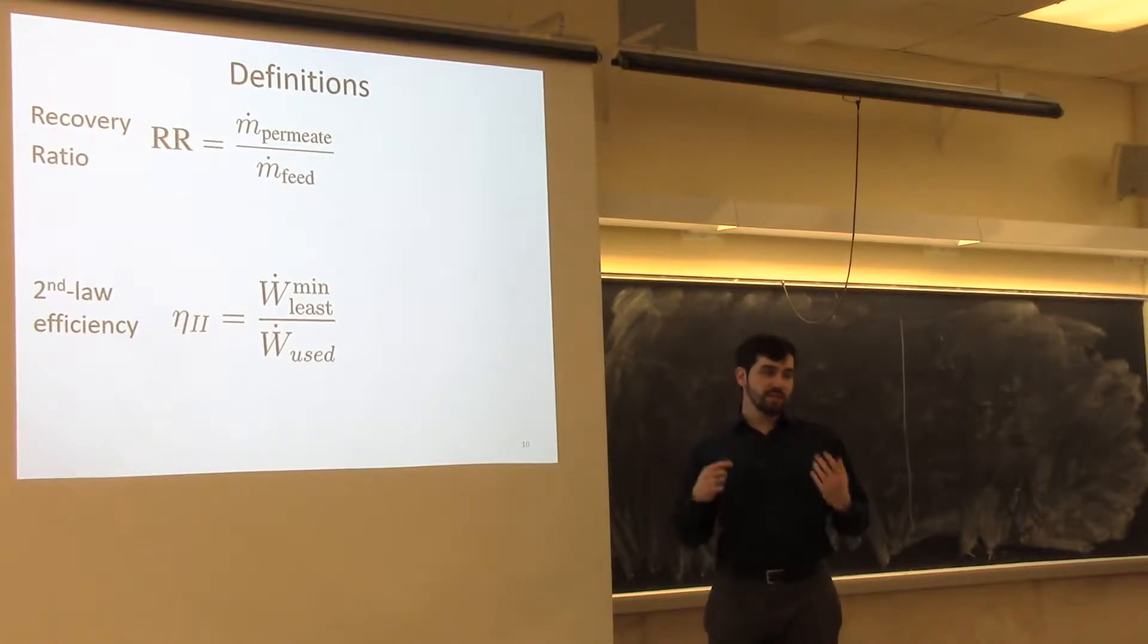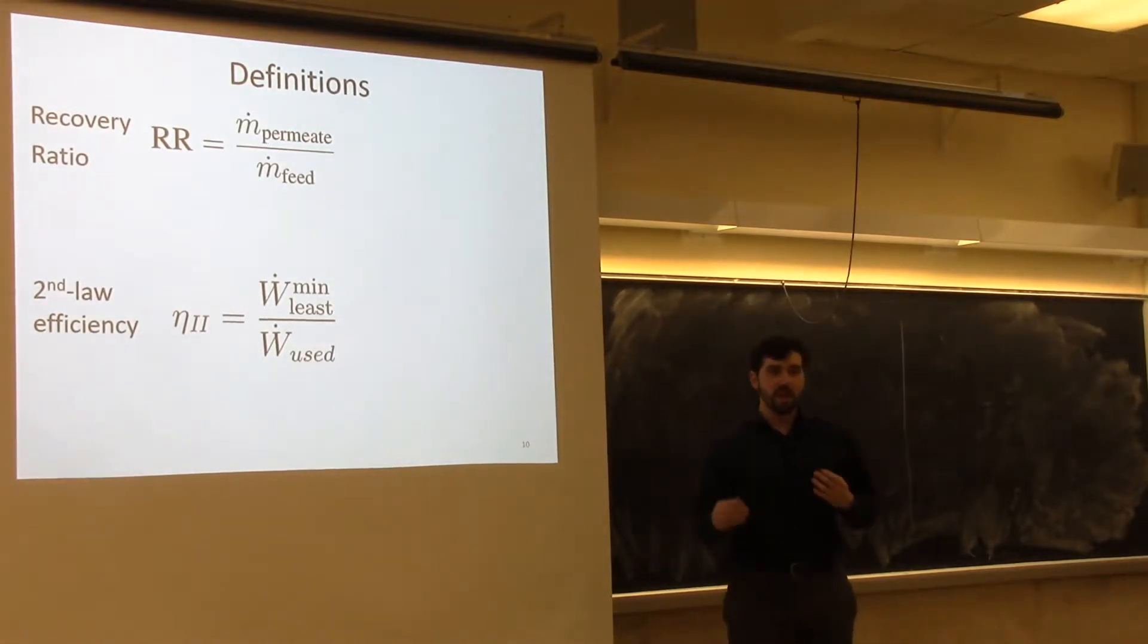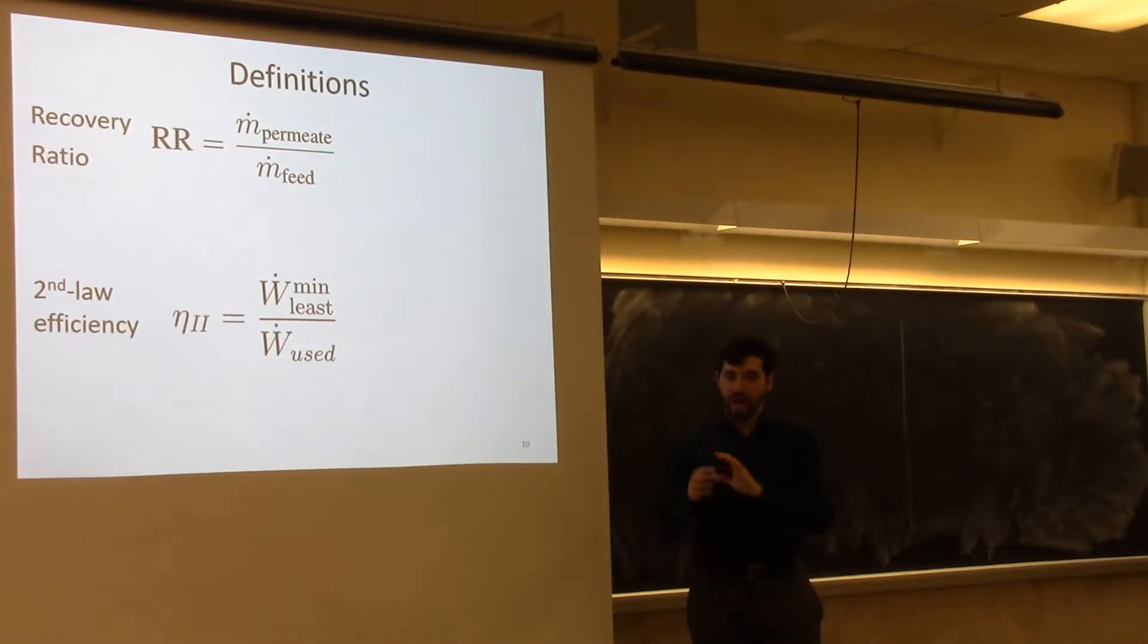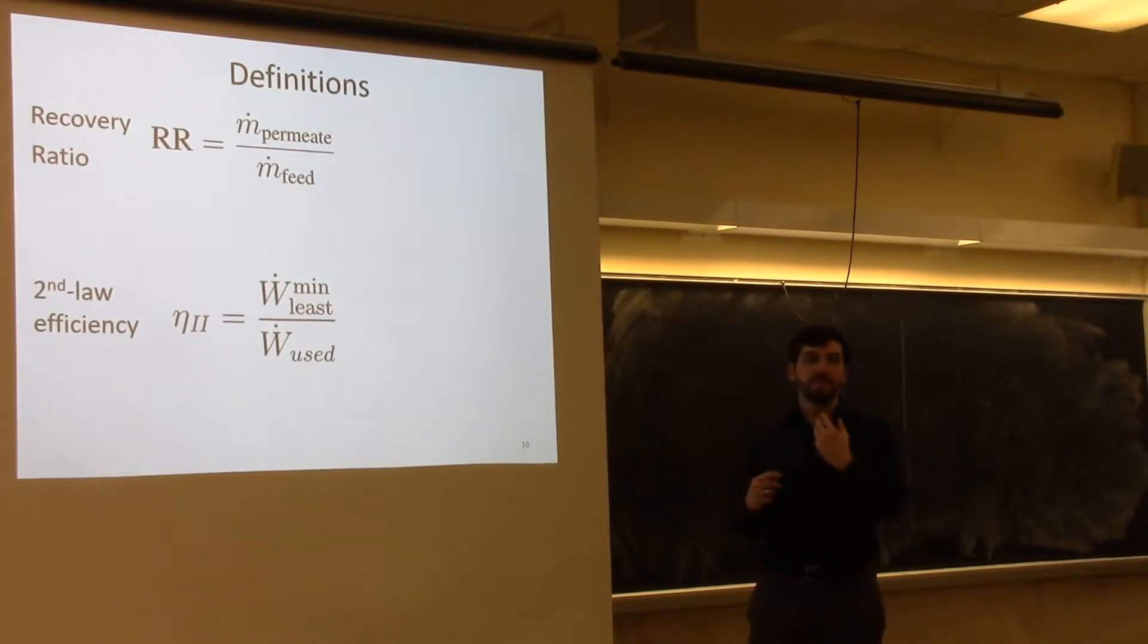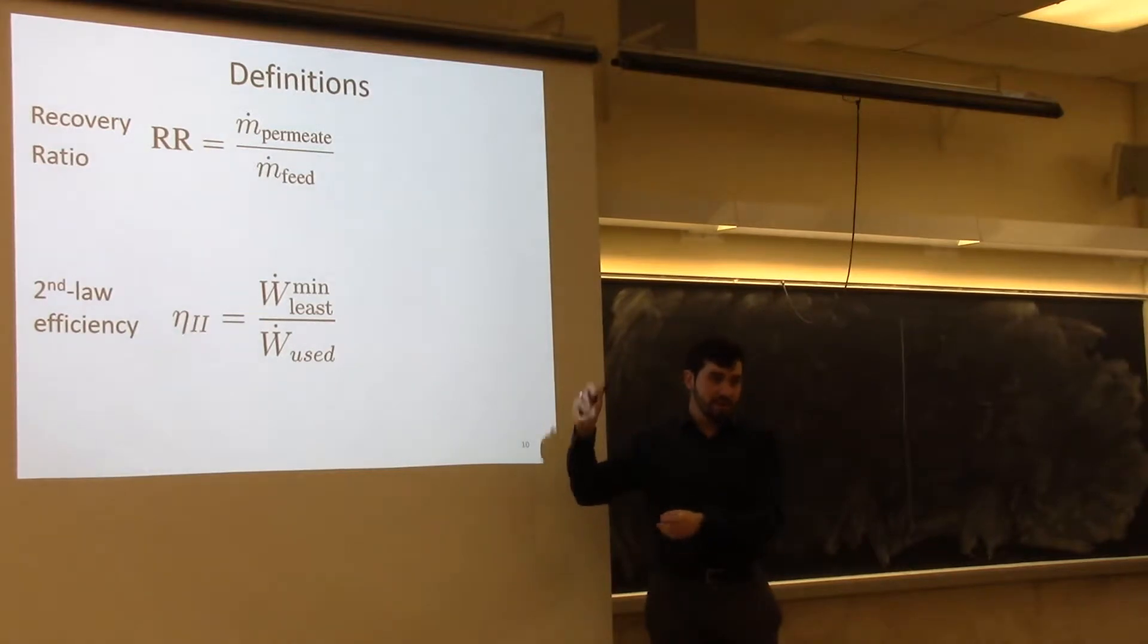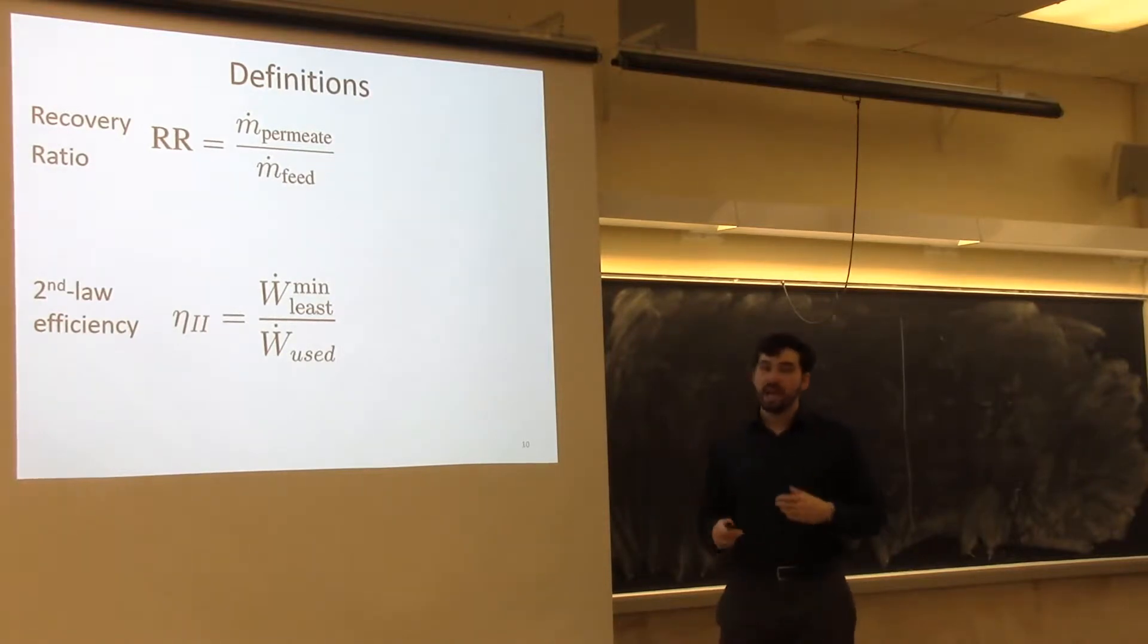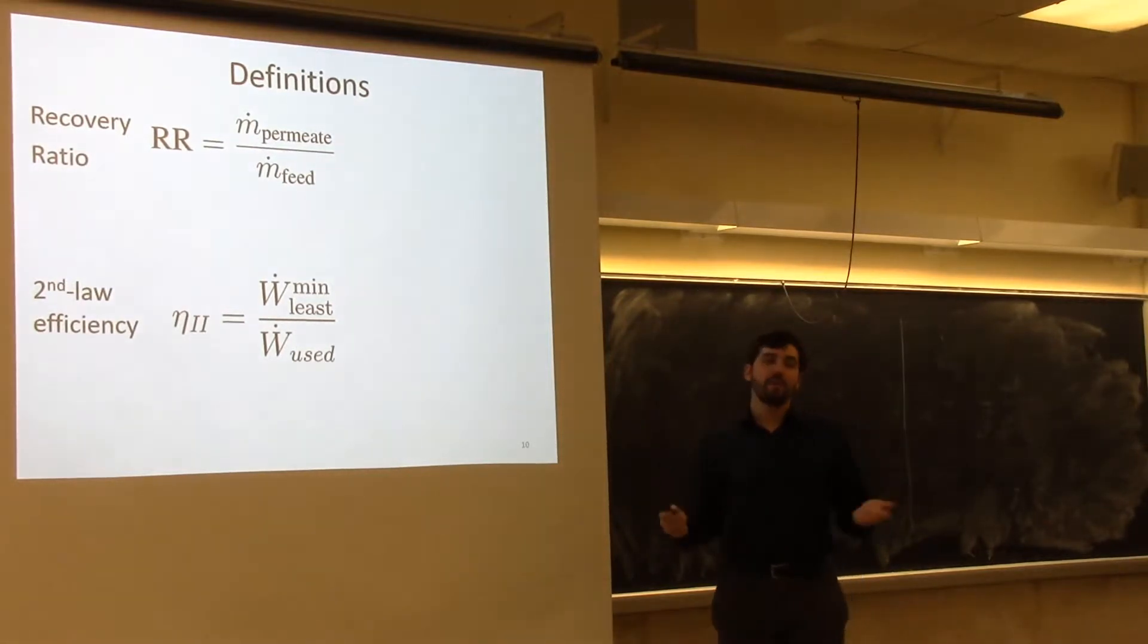The other main metric we need is some efficiency metric. The most universal efficiency metric is the second law energy efficiency. This is the most universal metric that you can even use to compare thermal systems and mechanical systems versus solar powered systems. Essentially, it's a ratio comparing the minimum least work for a separation to occur to how much more you actually used. There's some minimum least work to make the separation occur in a reversible scenario. Realistically, you're going to be using more than that minimum.